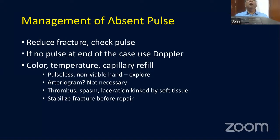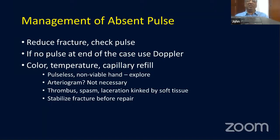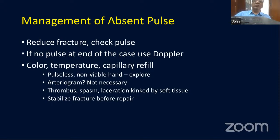If the hand is pulseless and non-viable — no circulation, no capillary return, no Doppler signal, very low oximetry readings — you need to explore the vessel. An arteriogram is not really necessary because you know where the vascular injury will be at the fracture site. Proceed directly to vascular exploration and repair or reconstruction if required.